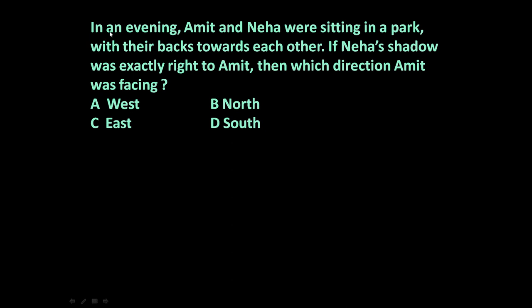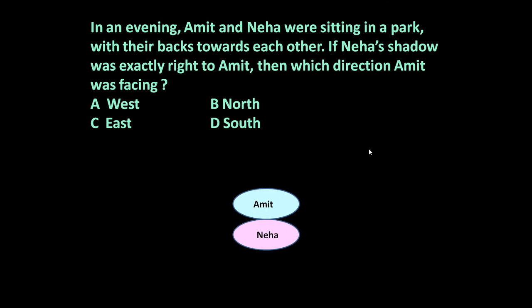The given problem is: in an evening, Amit and Neha were sitting in a park with their backs towards each other. If Neha's shadow was exactly to the right of Amit, then which direction was Amit facing? The important points are: it was an evening, and Amit and Neha were sitting with their backs towards each other.